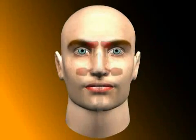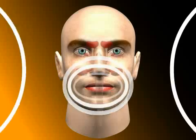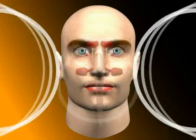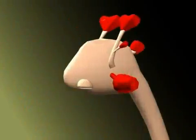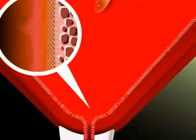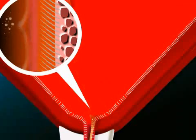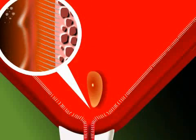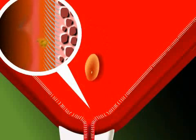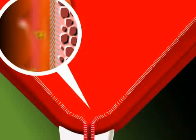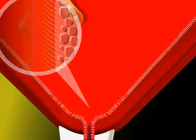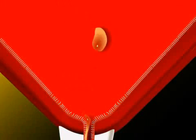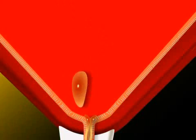Contrary to earlier assumptions, the paranasal sinuses have no function as resonance caves during voice formation. Paranasal sinuses are outfitted with a special mucosa. The mucosa consists of small protuberances called cilia, located above a layer of mucus. With every beat of the cilia, mucus containing dust particles from the air are transported toward the nose. In this way, our sinuses clean themselves.